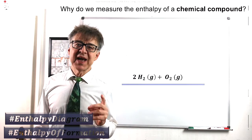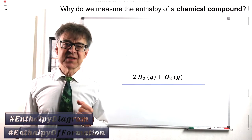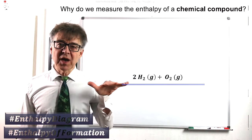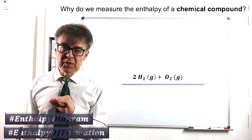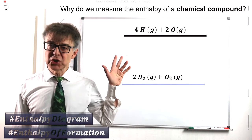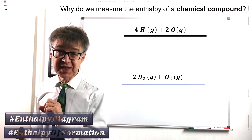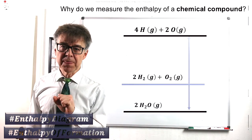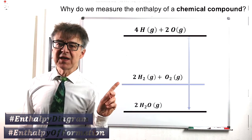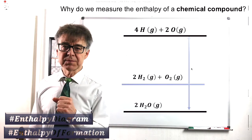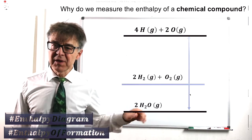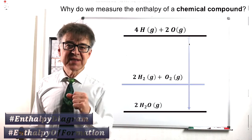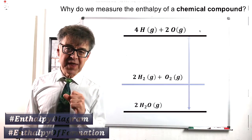Let's draw an enthalpy diagram of water and the elements it is composed of. The elements H2 and O2 mark the zero level. The atoms H and O mark a significantly higher energy level, and water is relatively low in energy.